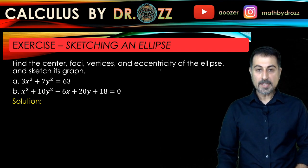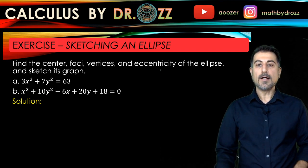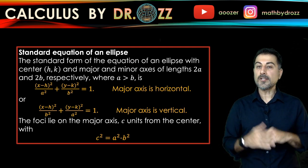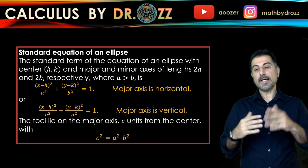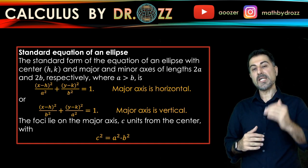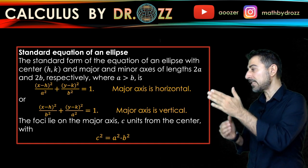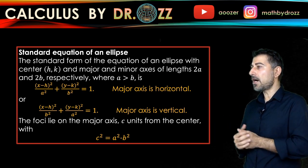Okay, so at this moment, it's better to remember the standard equation of an ellipse. So in this regard, you have two different kinds. In one case, you have the major axis to be horizontal. In the other case, the major axis is to be vertical.